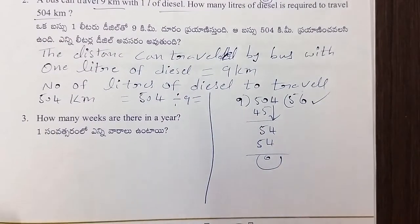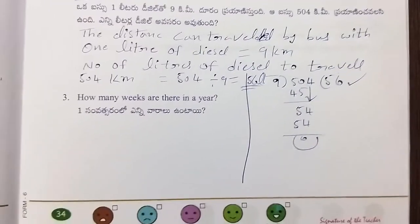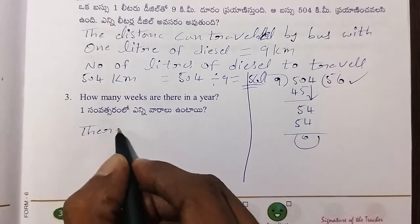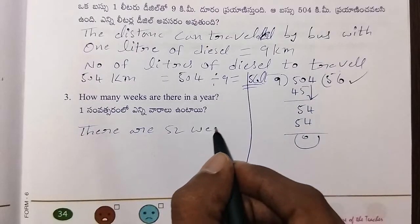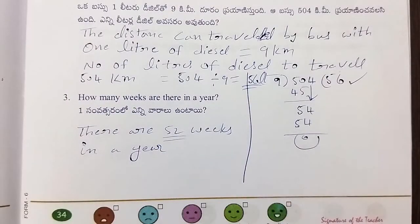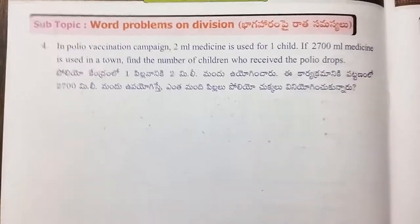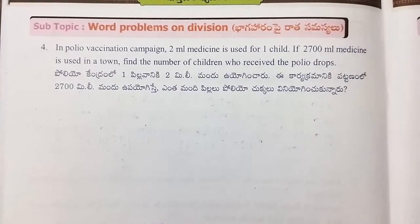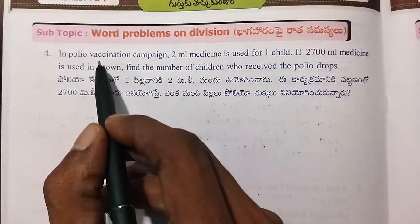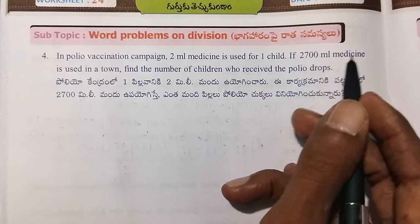The bus can travel 10 km with one liter of diesel. Number of liters of diesel required to travel 504 km equals 504 divided by 10.